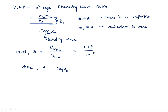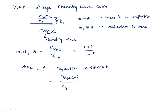VSWR, indicated by S, is equal to Vmax divided by Vmin. This can also be expressed as (1 + ρ) / (1 − ρ), where ρ is the reflection coefficient. The reflection coefficient ρ equals the reflected power divided by the incident power.